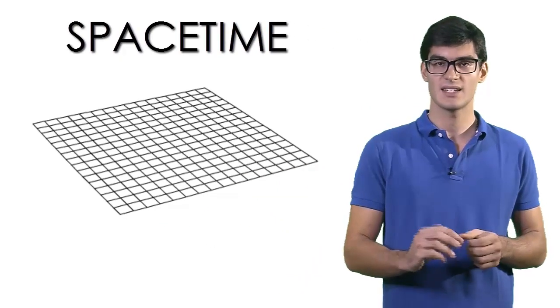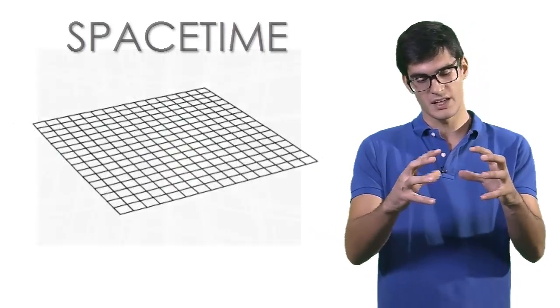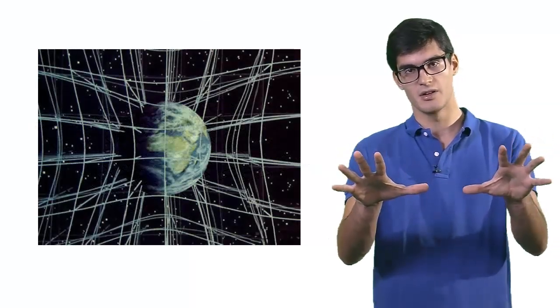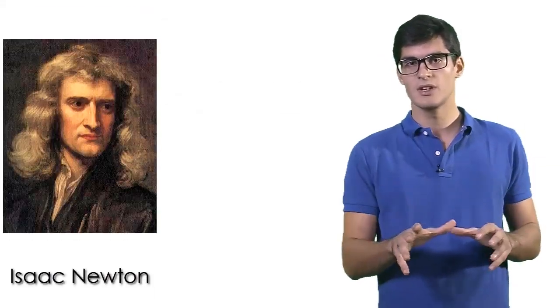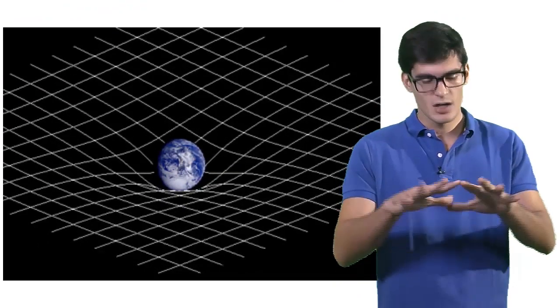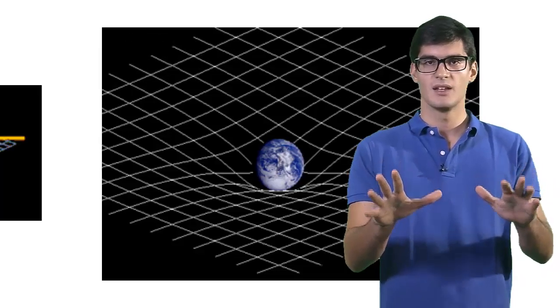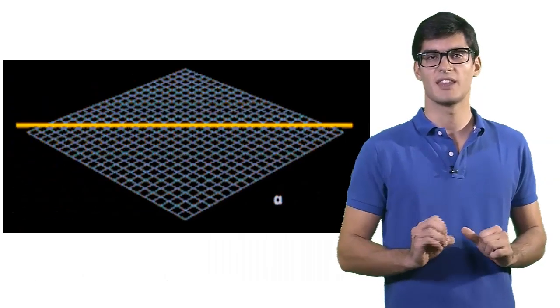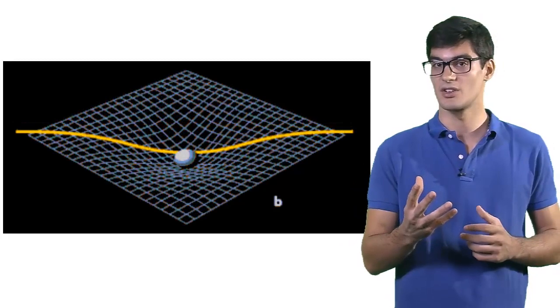Einstein realized that this entity is malleable and can be deformed by matter. Gravity is no longer viewed as a physical force acting at a distance, but really as the curvature of space-time. This curvature changes the natural path that matter follows, causing what you call gravitation.